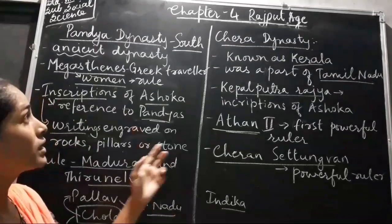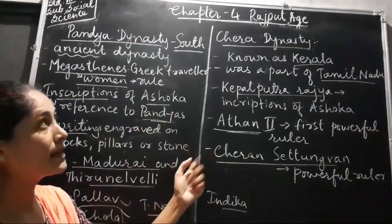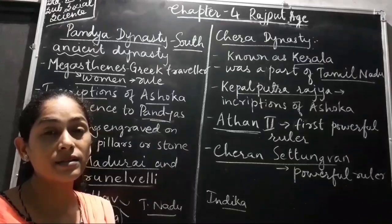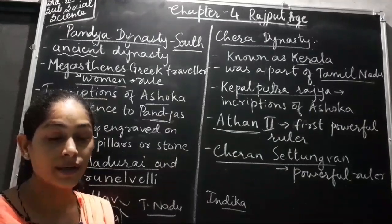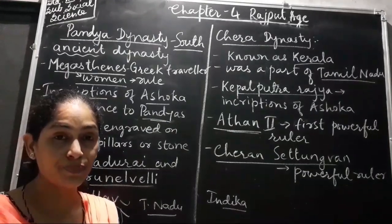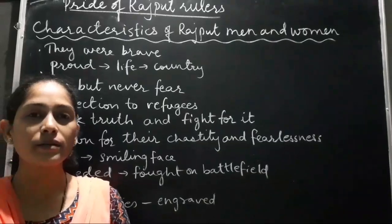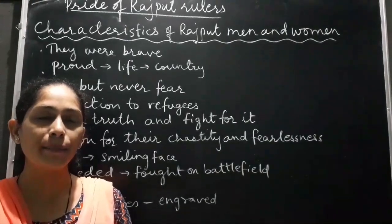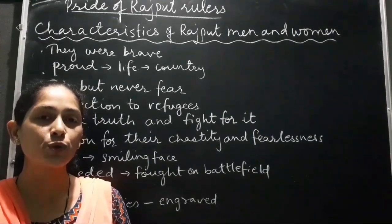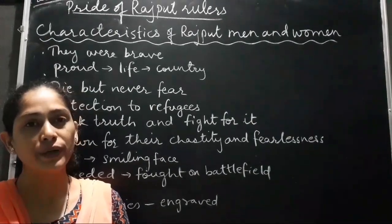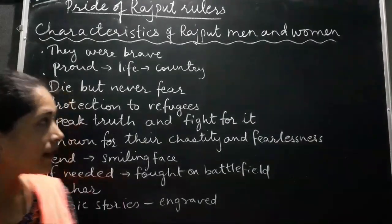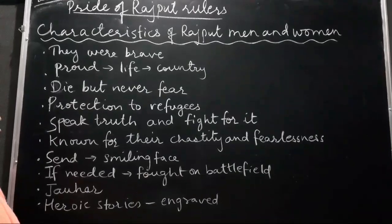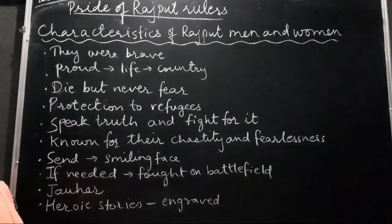Like this we have learnt about the Pandya dynasty and the Chera dynasty — the last dynasties in our textbook. Now let us go through the last portion of the chapter, that is the pride of Rajput men and women. Here I have written the characteristics of Rajput rulers.